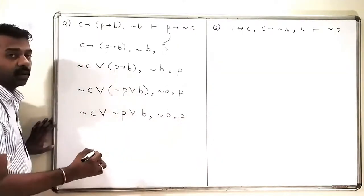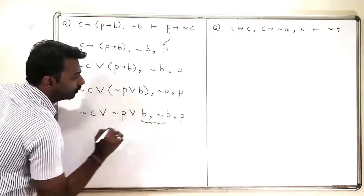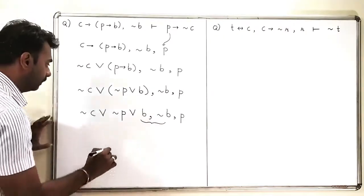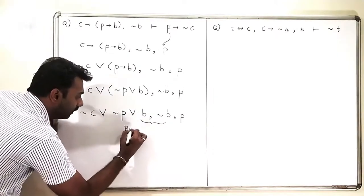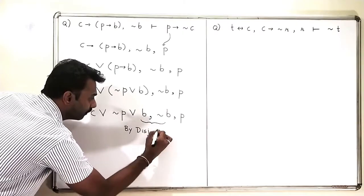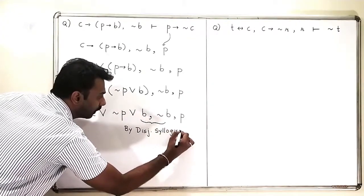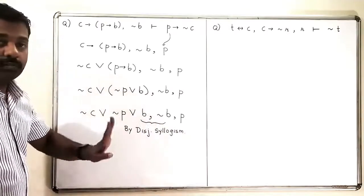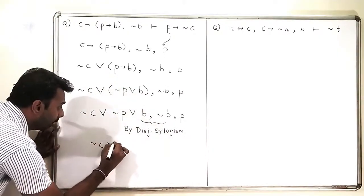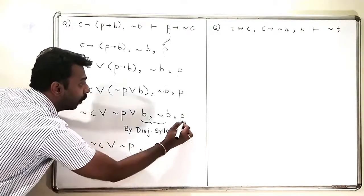If I look at these two things, I can now apply disjunctive syllogism. By disjunctive syllogism, B and negation B will cancel out, so I am left with negation C or negation P, together with P.